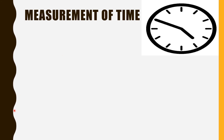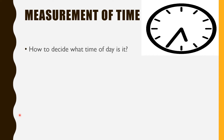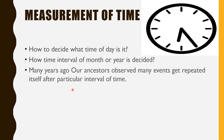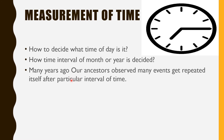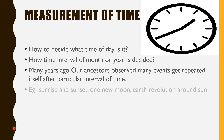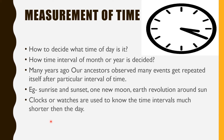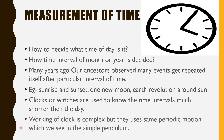Measurement of time — have you ever wondered, if you don't have a clock, how would you decide what time of day it is? How are time intervals of a month or year decided? Many years ago, our ancestors observed many events that repeated after particular intervals of time. That's why they made the concepts of day, month, and year — based on events like sunrise and sunset, one new moon, and Earth's revolution around the sun. Clocks and watches are used to measure time intervals much shorter than a day. The working of a clock is complex, but it uses the same periodic motion seen in a simple pendulum.